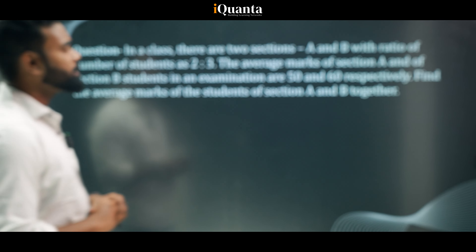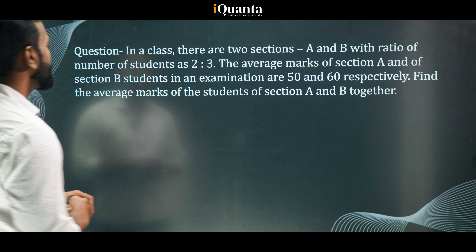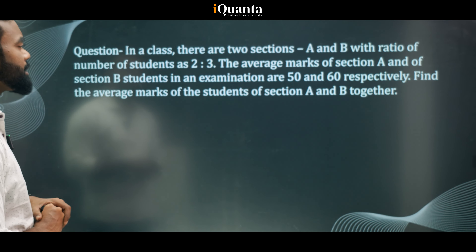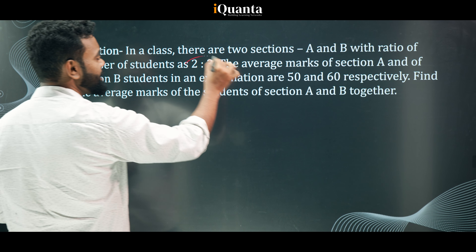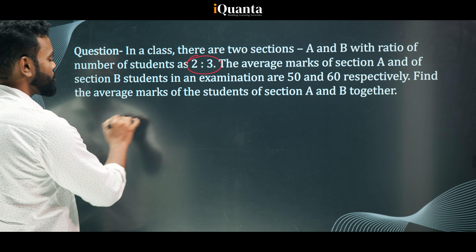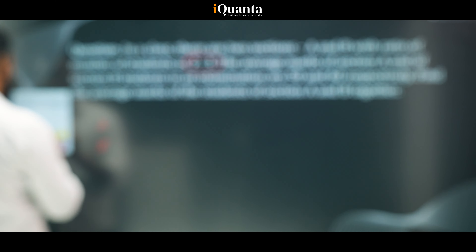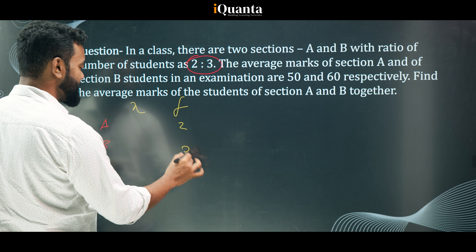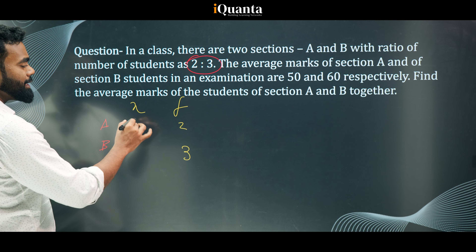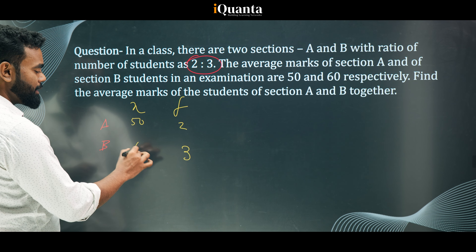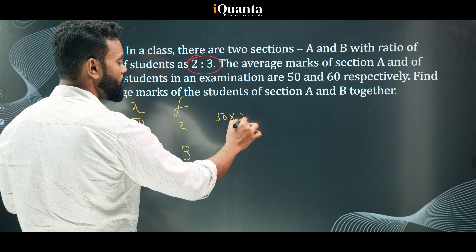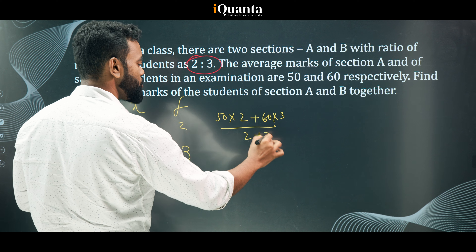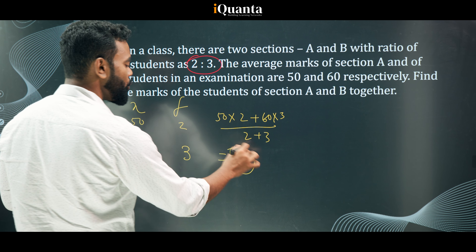Now consider a variant: sections A and B have a ratio of number of students 2:3, and average marks of 50 and 60. Find the average marks. Since we have the ratio, we take frequency as 2 and 3. The weighted average is (50×2 + 60×3) / (2+3), and if you solve this, you again get 54.